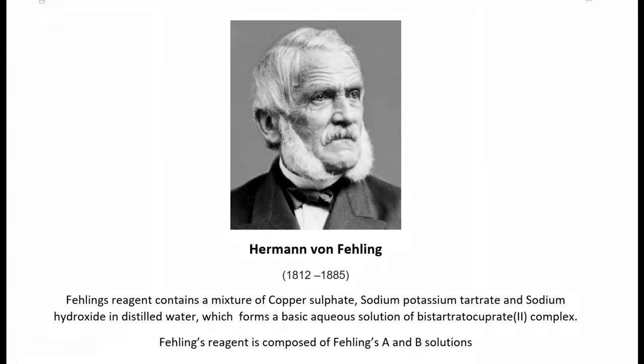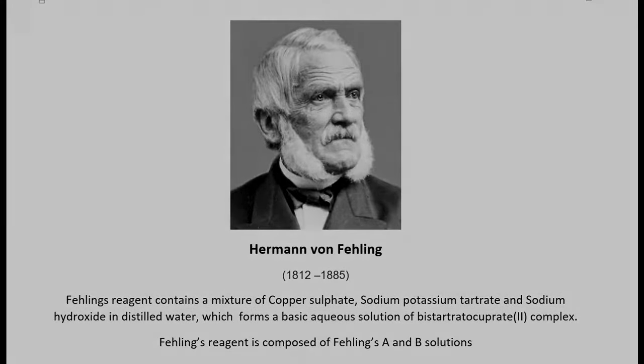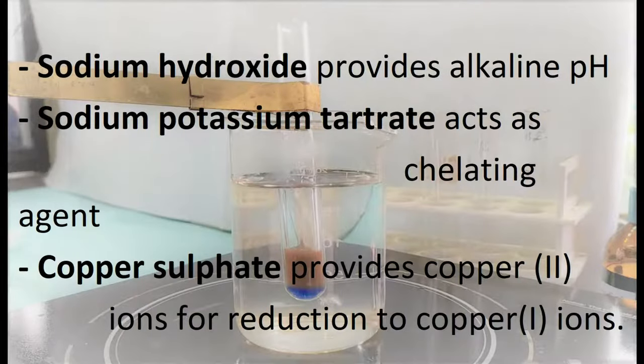The two solutions are mixed in equal amounts just before a test is performed. Sodium hydroxide provides the alkaline conditions required for the redox reaction to occur between the reagent and the reducing sugar in the test sample. Sodium-potassium tartrate acts as a chelating agent and complexes with the cupric ions of copper sulfate so that they do not deteriorate to cuprous ions during storage.